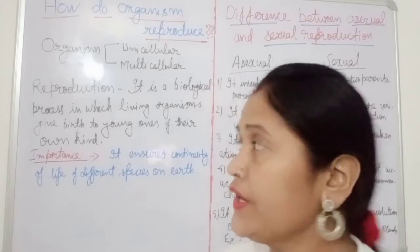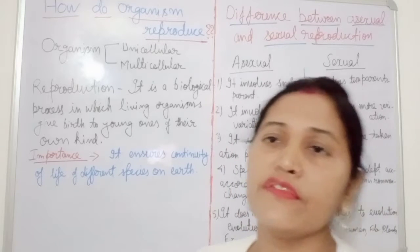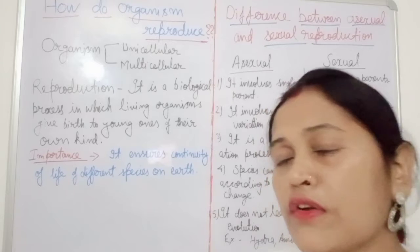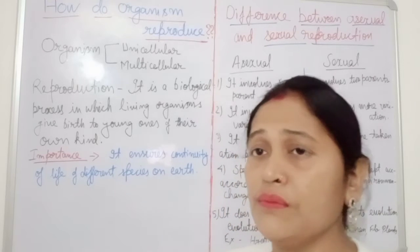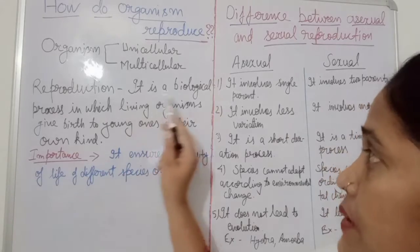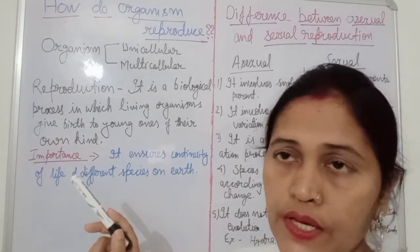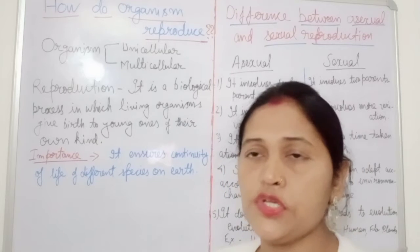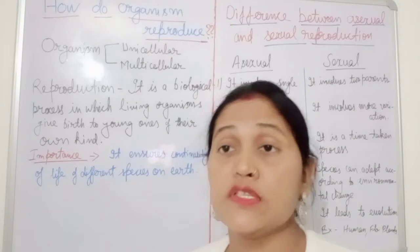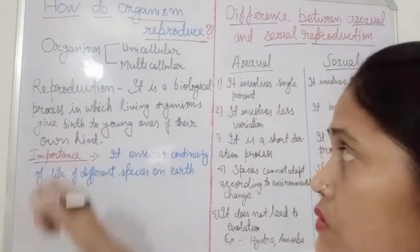Basically there are two types of organisms: unicellular and multicellular. Both types of organisms can reproduce, but they reproduce in different ways. Reproduction is a biological process in which living organisms give birth to young ones of their own kind — a process of production of new organisms from their parents. The offspring may be exactly similar or may show some variation.